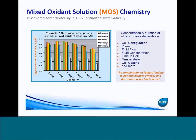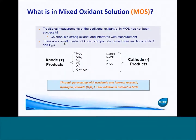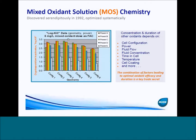At the same time, if you change the cell configuration — again, we're talking cell spacing, cell coating, et cetera — you can get almost all the way up to a three and a half log removal with cryptosporidium. This is at a little under a four-hour contact time at a five milligram per liter dose.